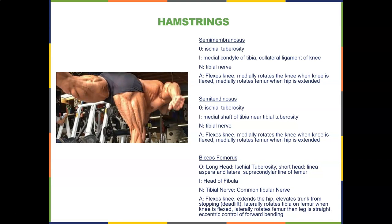The semimembranosus flexes the knee, medially rotates the knee when the knee is flexed, and medially rotates the femur when the hip is extended. You need to work the hamstrings in different positions — the deadlift is probably one of the best exercises for the hamstrings, and the single-leg deadlift also targets the glute medius.